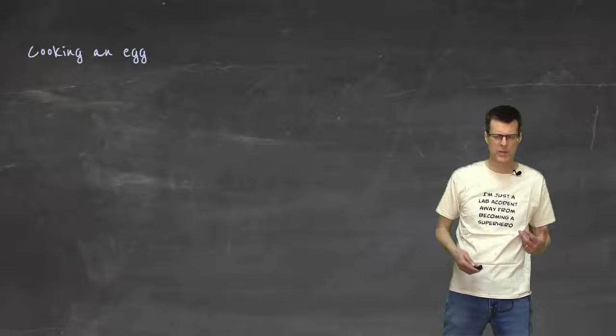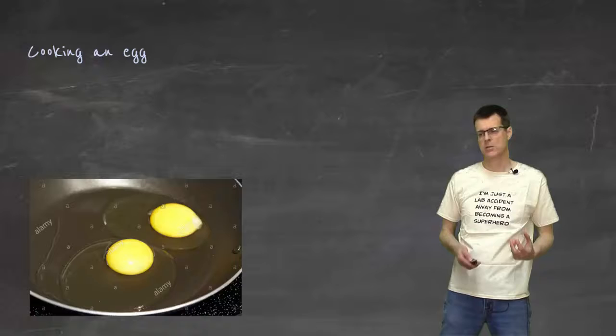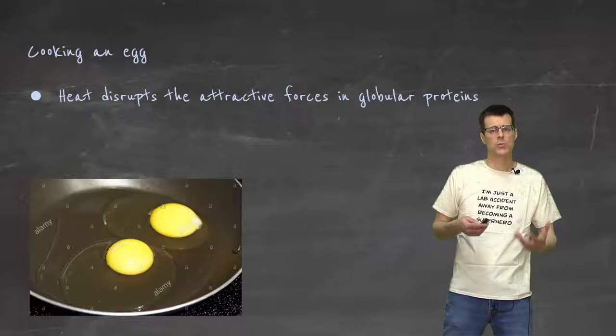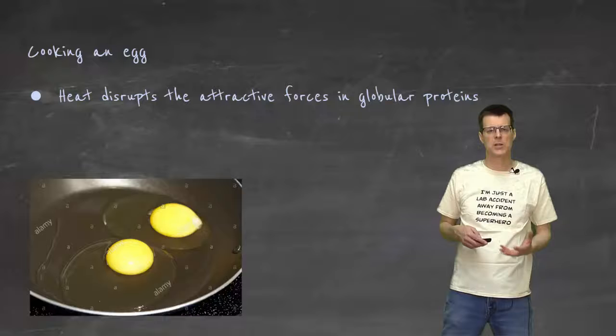When you crack an egg into a pan, and it works true if you're boiling it but you don't really see the changes so much, it starts out that the egg white is clear, it's see-through, it has no color at all. But as you cook it, what happens is the heat starts to disrupt the protein structure. The proteins are kind of globular, the attractive forces that hold them in a particular arrangement, the heat disrupts that.